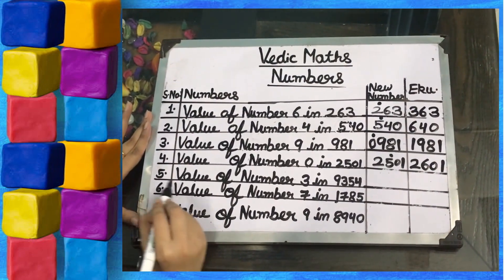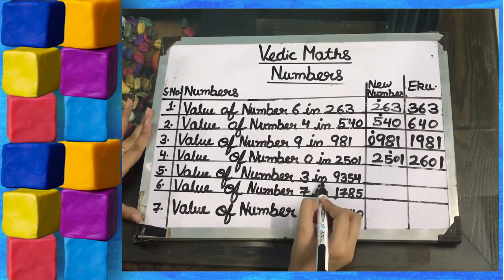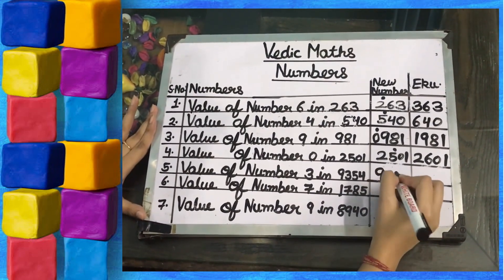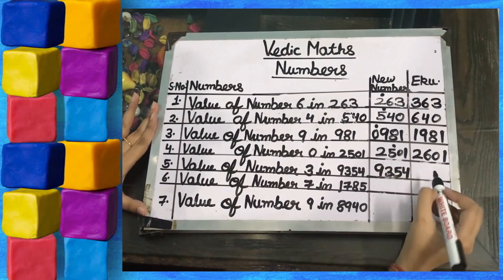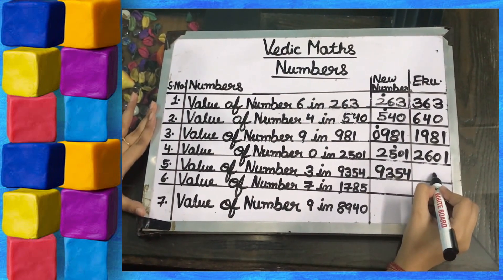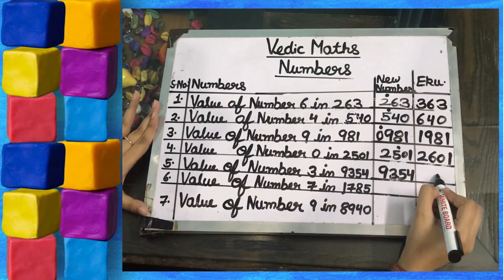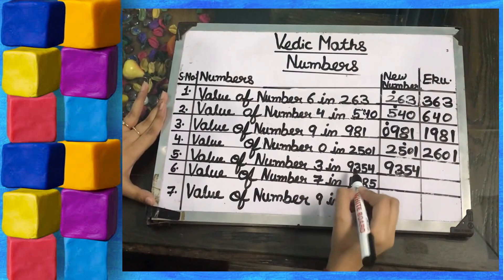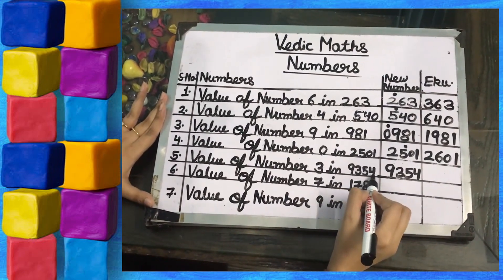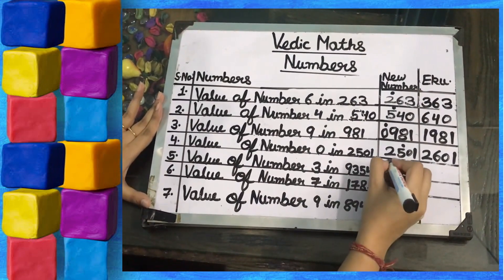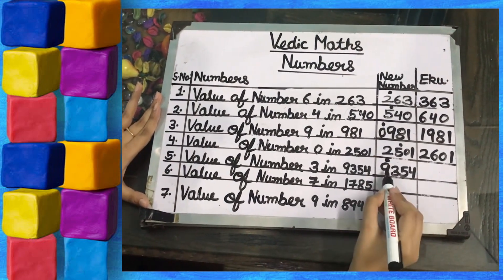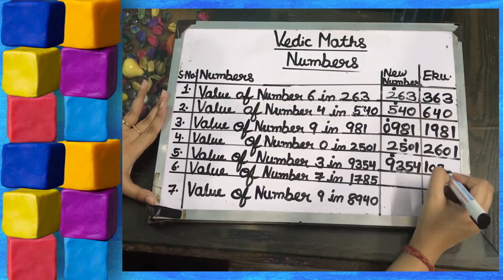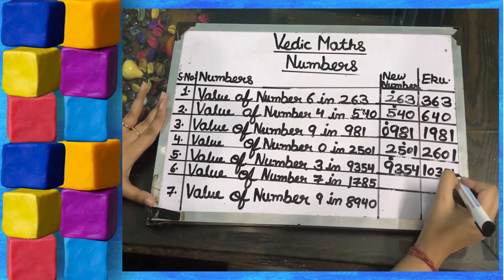Fifth part — value of number 3 in 9354. We write the number 9354. We need to find the Ekadiken Purven, which means plus 1 in the previous digit. The previous digit of 3 in 9354 is 9, so we put a dot on 9. 1 plus 9 is 10. The 3, 5, and 4 all remain the same.